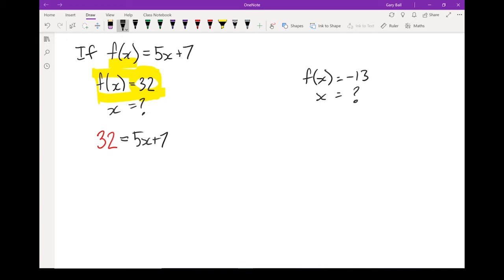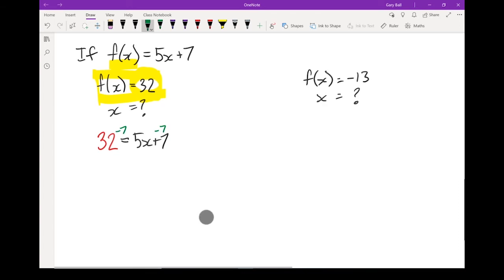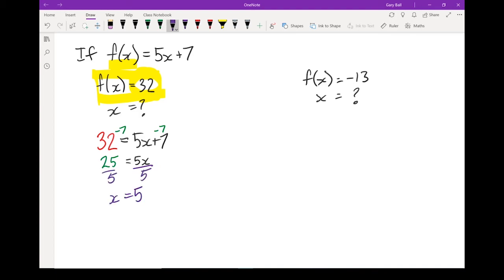Now I just use some algebra to solve for x. Let's subtract 7 from both sides. So 32 minus 7 is going to give me 25, equals 5x, divide both sides by 5, x equals 5. So if I put 5 into my formula, I end up with an answer of 32. So if I wanted to write that out, I would say f(5) equals 32.